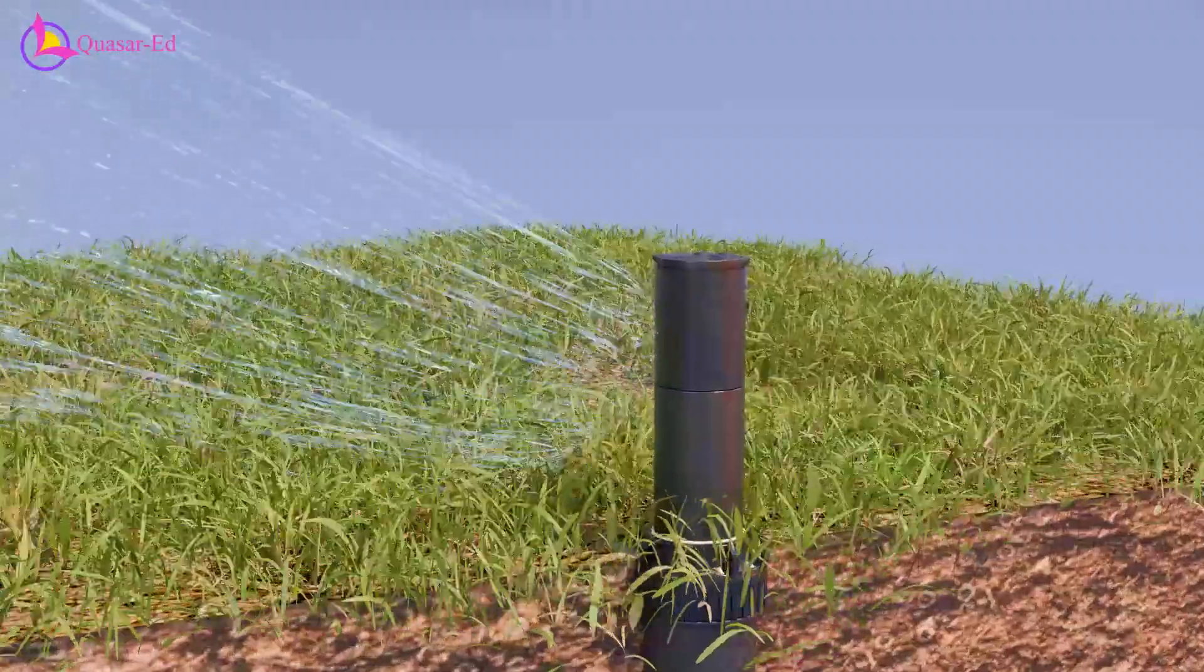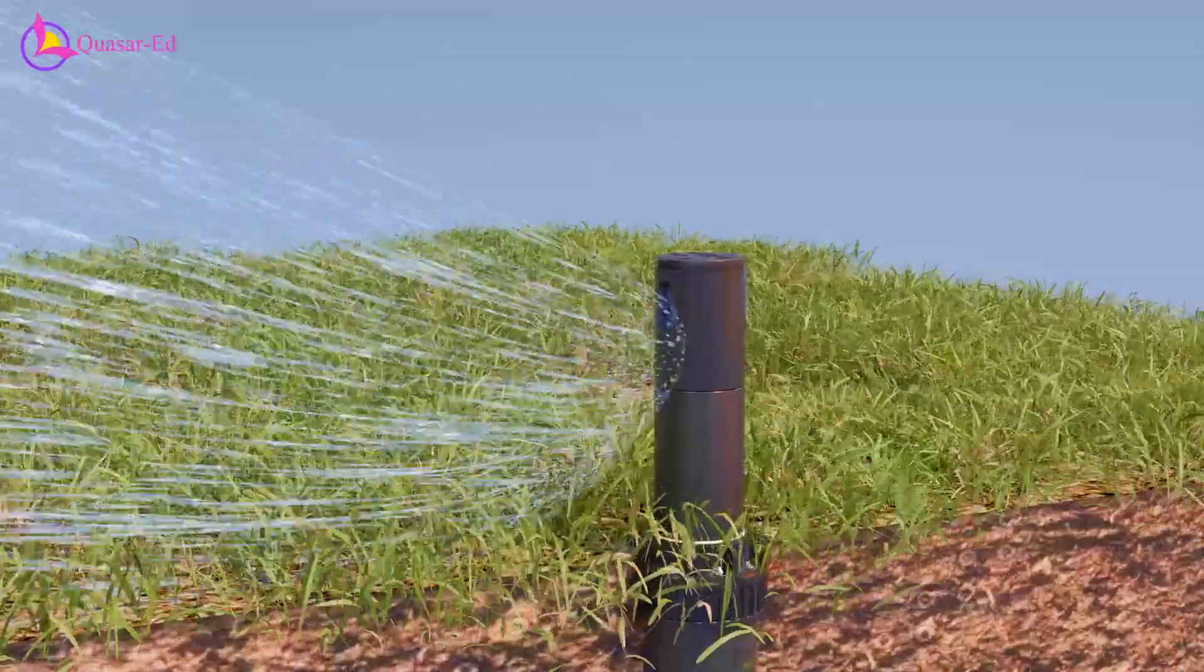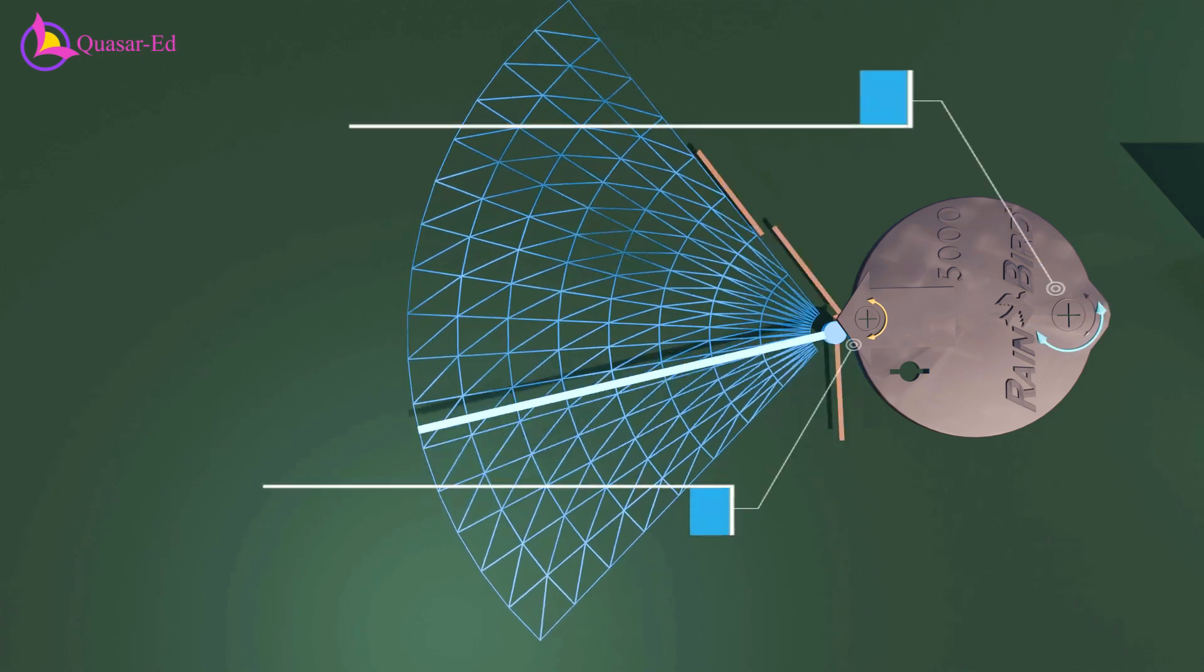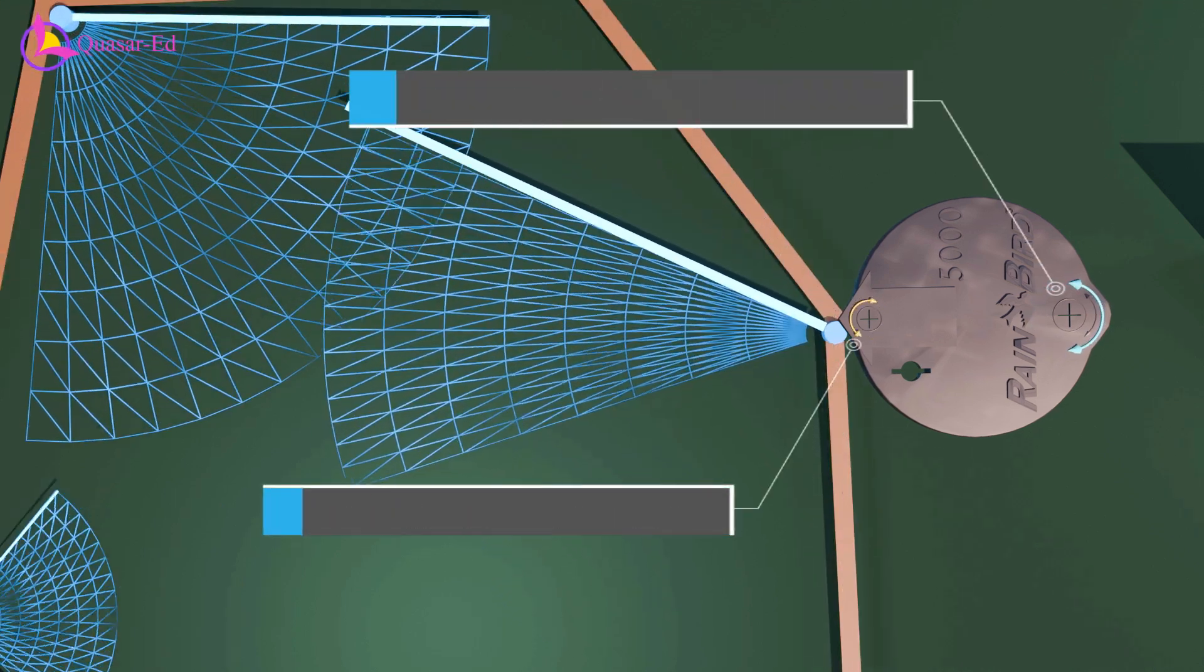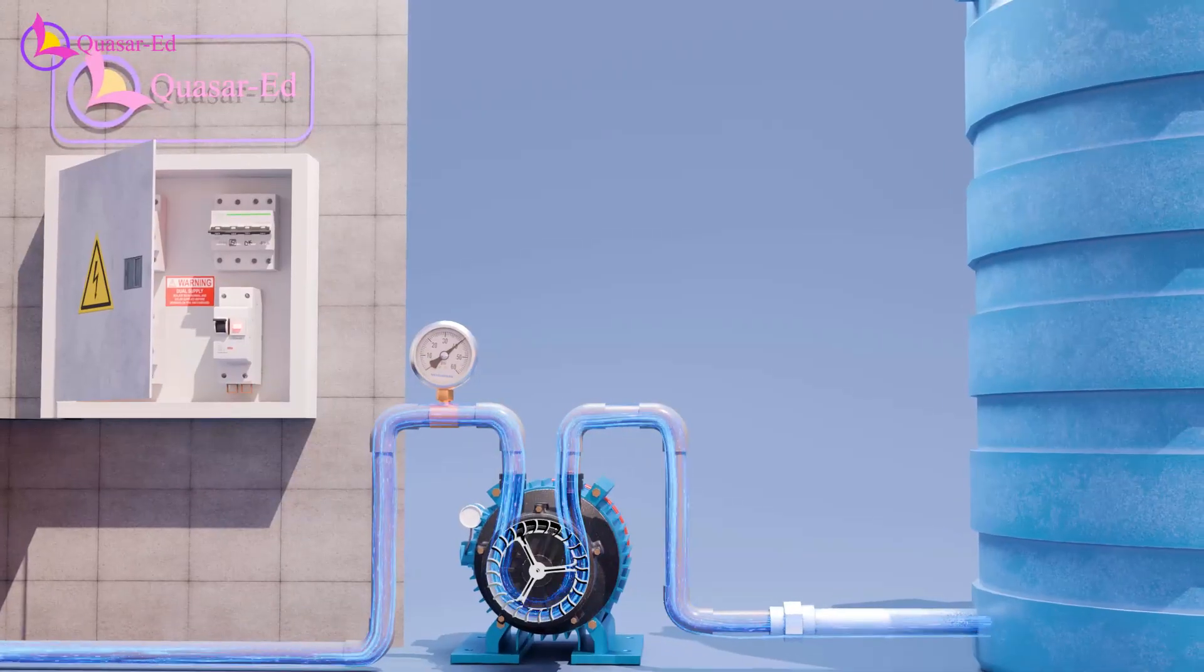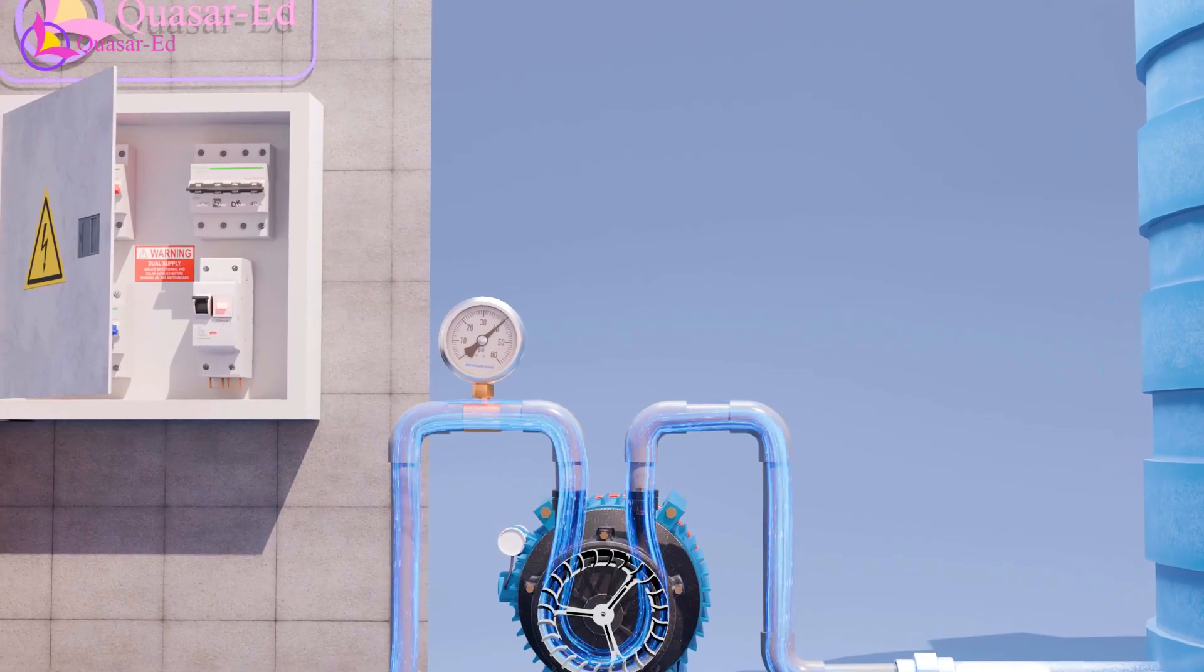You can even adjust the spray angle and distance by turning these screws, allowing for precise control over the watering pattern. Plus, it operates solely on water pressure. Sounds intriguing, right?